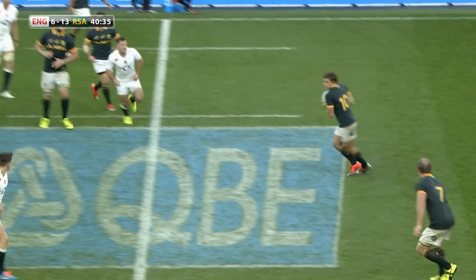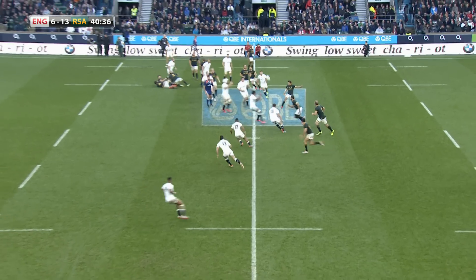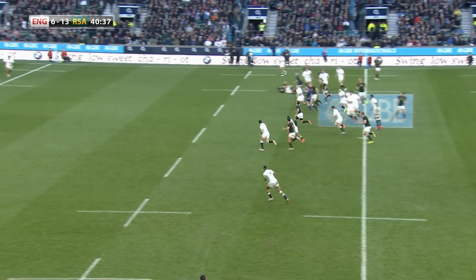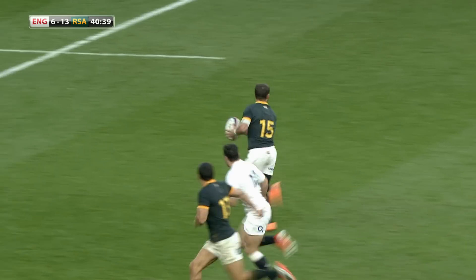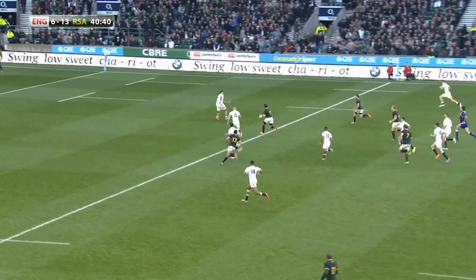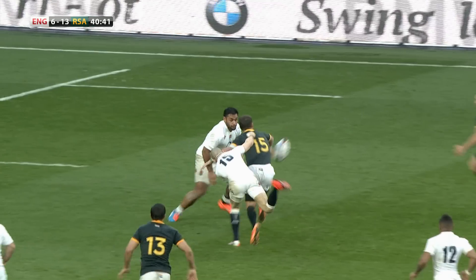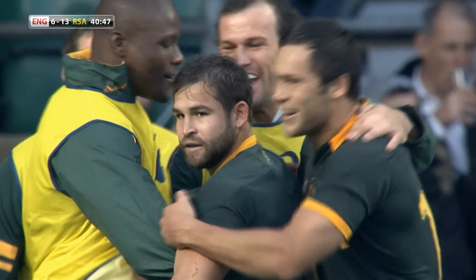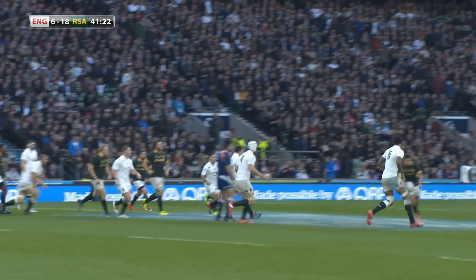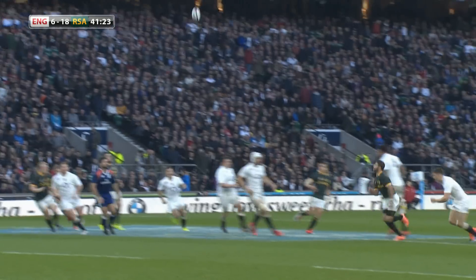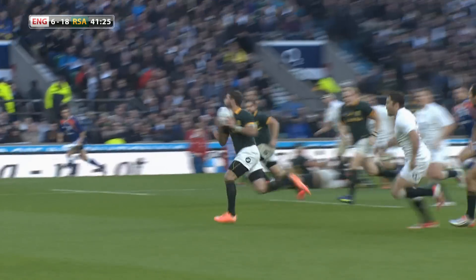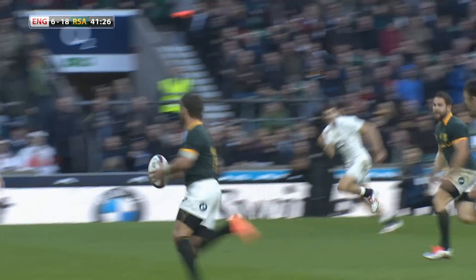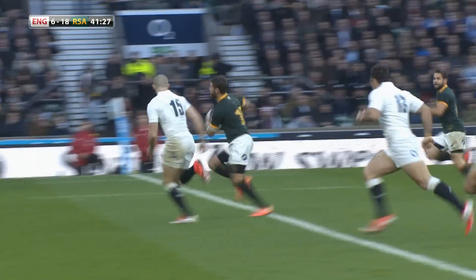In the second half, the game exploded into life. Firstly, Lambie produced a moment of magic for the South Africans — a perfectly weighted chip falling into the arms of full-back Willie le Roux, who drew Mike Brown and Billy Vunipola before offloading superbly to Reinach to cross. The Springboks starting to build a commanding lead at 18-6.